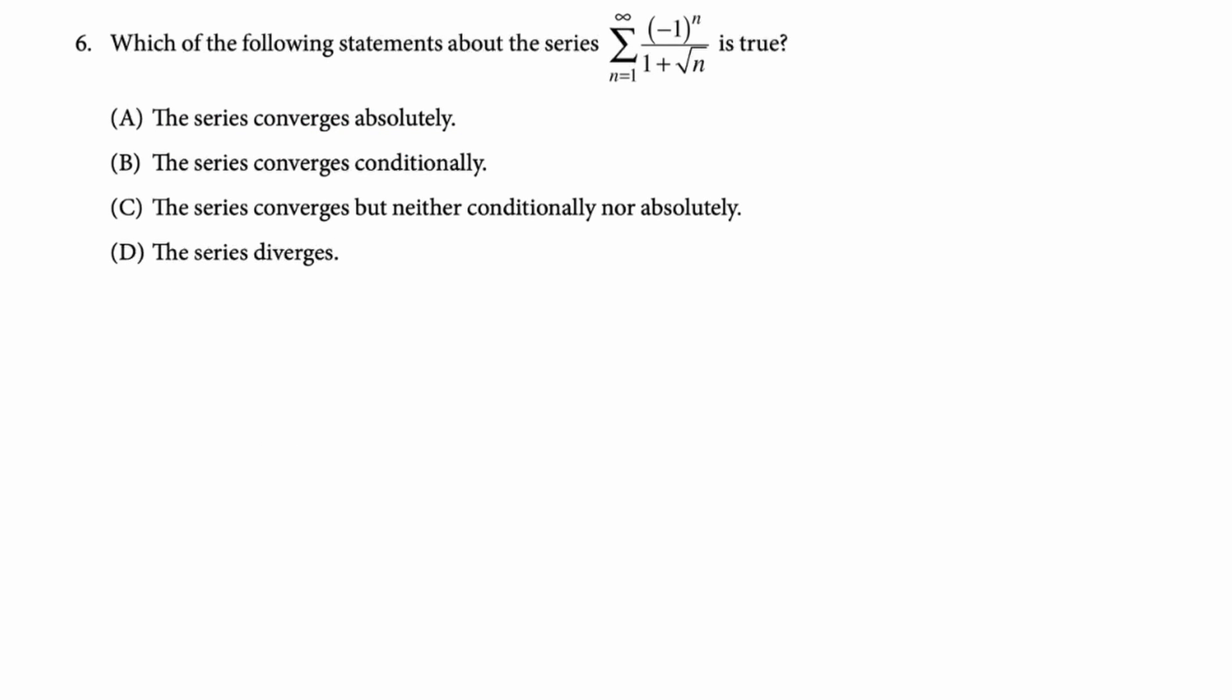Number six, which of the following statements about the series, the sum from one to infinity negative one to the n over one plus root n is true? All right. So first we got to figure out if this thing converges absolutely, which is kind of the dream when you're dealing with these sorts of things. So we're gonna take the absolute value of the nth term. That's going to give us the series one over one plus root n. You might have the sense that that diverges. It definitely does.